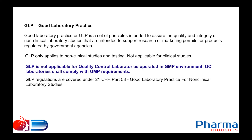In either ICH Q7 GMP Guide for APIs or in 21 CFR Part 211, there is a separate section for laboratory controls. All QC laboratories working in a manufacturing environment shall comply with the requirements mentioned under the laboratory controls section. GLP regulations are covered under 21 CFR Part 58, whereas GMP regulations are covered under 21 CFR Part 211.